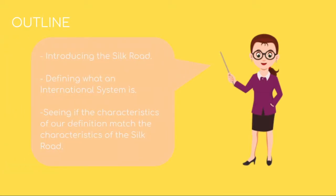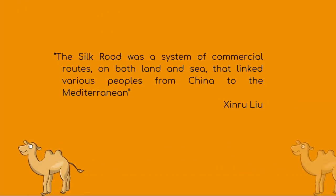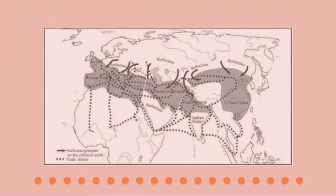We will try to answer our thesis by introducing the Silk Road, then defining what an international system is, and seeing if the characteristics of our definition match the characteristics of the Silk Road. According to Xinru Liu, author of The Silk Road in World History, the Silk Road was a system of commercial routes on both land and sea that linked various peoples from China to the Mediterranean. As you can see, this was the scope of the Silk Road.